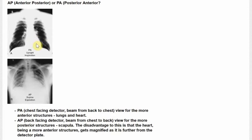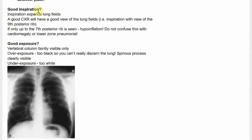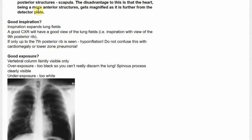In AP, however, which commonly happens when people are more unwell, the back is facing the detector. So the beam goes from the chest to the back, and the heart structures get enlarged because the heart is mainly sitting anteriorly. So as you can see there, the heart does look bigger compared to the PA film. The other technicality to appreciate is inspiration — is it good or poor inspiration?